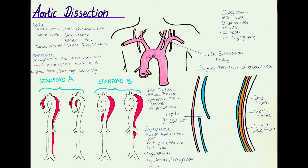The thickest and most outer layer, the tunica adventitia, holds the vasa vasorum as well as some nerves and loose connective tissue. Vasa vasorum is basically blood vessels that supply the aorta, so the blood vessels of the blood vessel.